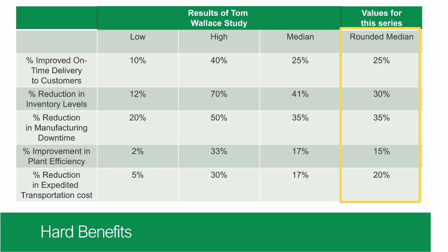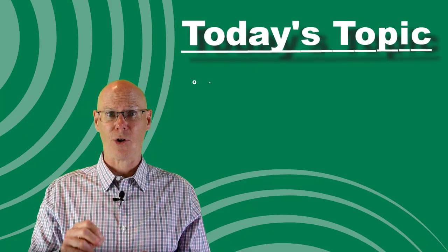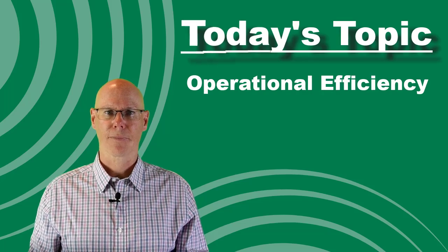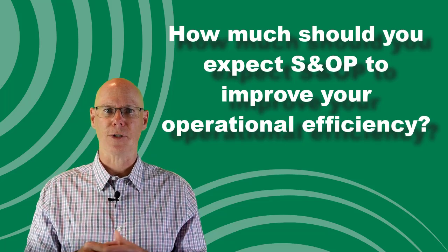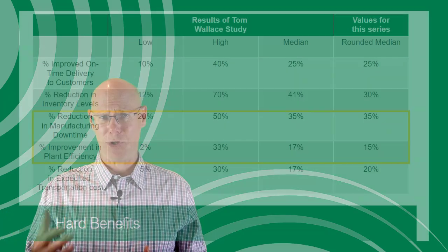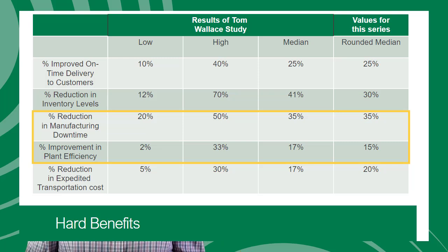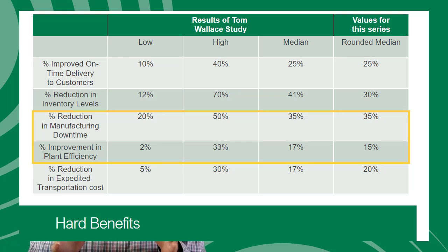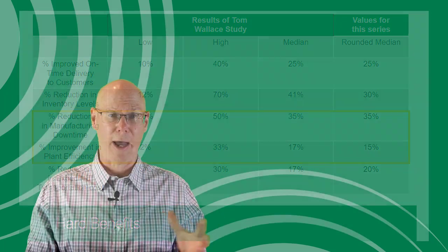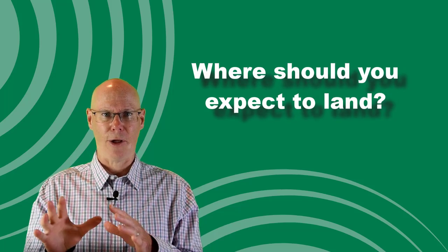I'll be using these numbers to walk through the benefits in these videos. For today I'm going to look at operational efficiency — how much should you expect S&OP to improve your operational efficiency? Tom's table provides a wide range for this: between 2 and 33 percent for improving plant efficiency, and somewhere between 20 and 50 percent for reducing manufacturing downtime. I'm looking at both of these together because I see them as related, and you'll hopefully see why after I explain.